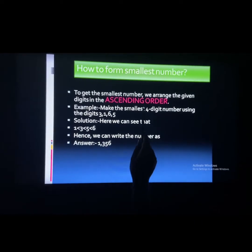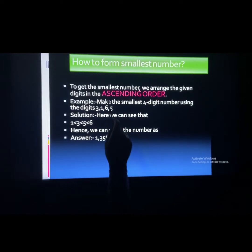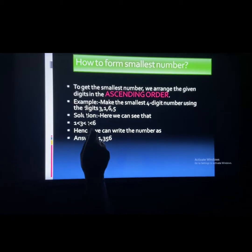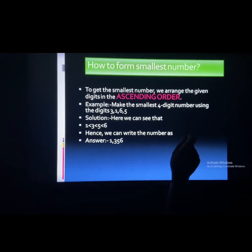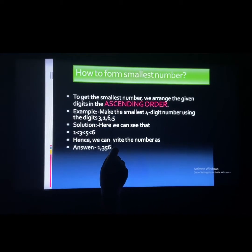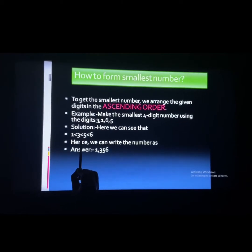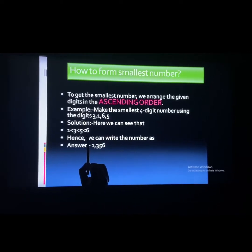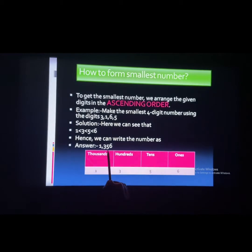Ascending order means from the smaller digit to the greater digit — it is just the opposite of how to form a greatest number. Let us take one example: make the smallest 4-digit number using the digits 3, 1, 6, and 5. We can see that 1 is smaller than 3, 3 is smaller than 5, and 5 is smaller than 6. Hence we can write the number as 1356.